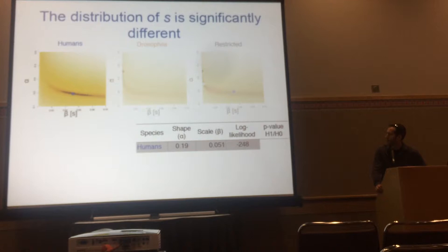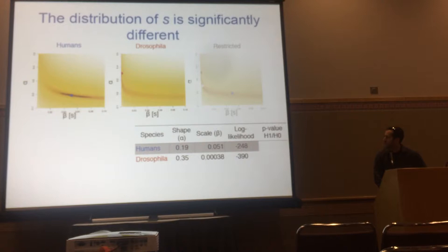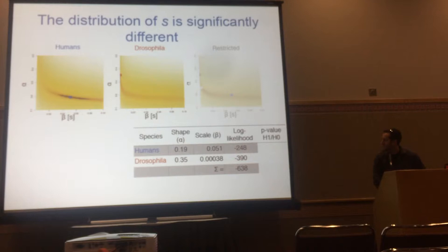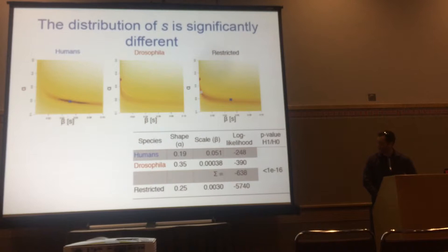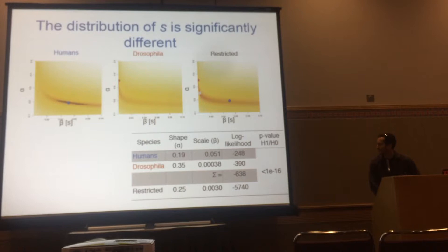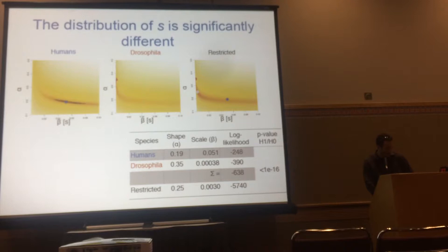We applied this approach to polymorphism data from Drosophila from Africa and from human populations, inferring the DFE. I'm showing the likelihood surface for the parameters of a gamma distribution of fitness effects, with parameter estimates in the table. We then fit a constrained model where parameters are forced to be the same between species and re-optimized the likelihood. The log-likelihood of the restricted model is substantially worse than the model where each species has its own DFE, and this is significant by likelihood ratio test — confirmed by simulations to get the proper null distribution.